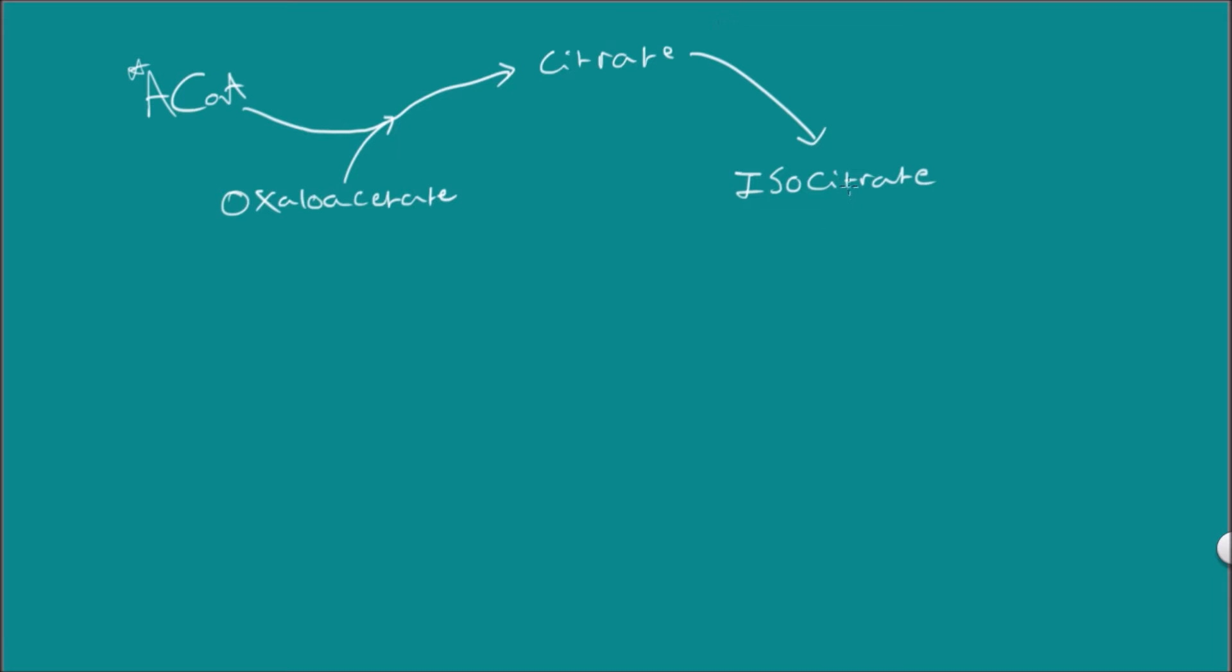This isocitrate will then be converted into alpha-ketoglutarate. I really hope I spell that right, but I'm a bit dyslexic. This is also a step where we get our first side products formed, being NADH and CO2. So this is between steps two to three.